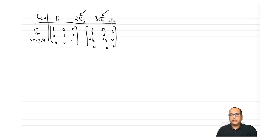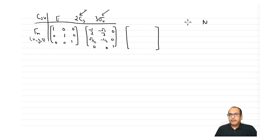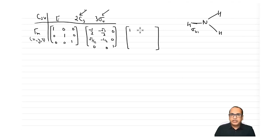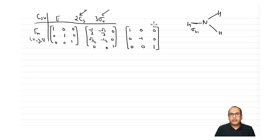For σv, since σv1 lies along the yz plane, it is easiest to write its matrix: [1, 0, 0; 0, −1, 0; 0, 0, 1]. We don't need to write matrices for the other two σv planes since all three belong to the same class and have the same trace.